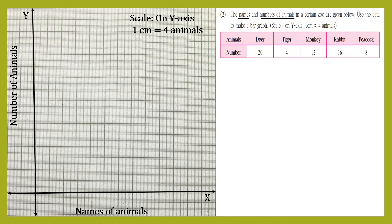The scale is given, so we'll write on top: on Y-axis one centimeter equals four animals. Now let's write the names of the animals on the X-axis: first is deer, then leaving one centimeter, tiger, then one centimeter for rabbits, then after leaving one centimeter, last is peacock. Let's mark points on the Y-axis and start numbering: zero, then four.